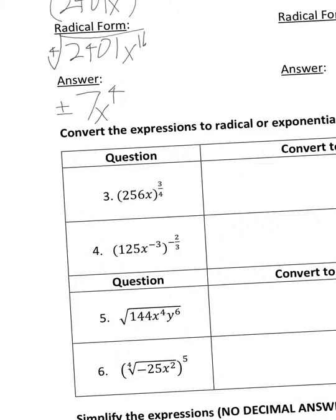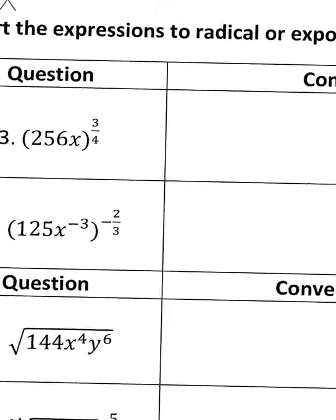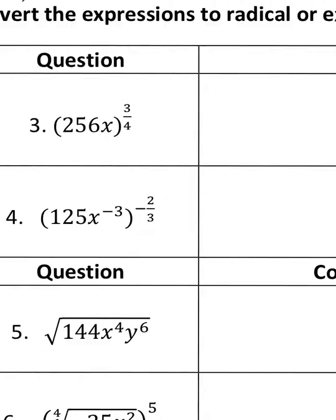Converting these expressions to radical or exponential form, looking at number 4, before you convert it to radical form, you need to take care of the negative exponent. Remember, those mean fractions. So you have 125 over x^3, and then that's raised to the negative 2/3. That takes care of the x^(-3).